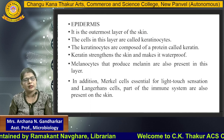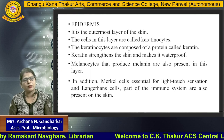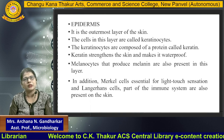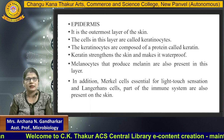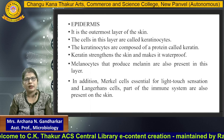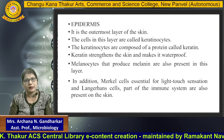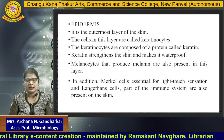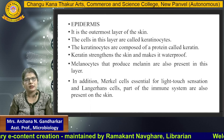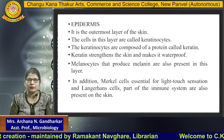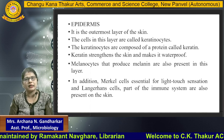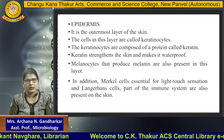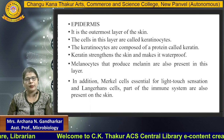In case of the epidermis, it is the outer layer of the skin. The main thin layer which we call keratinocytes — these keratinocytes are composed of the protein called keratin. Keratin strengthens the skin and makes it waterproof in nature. Also, a second cell type called melanocyte produces melanin and is also present in this layer. In addition to keratinocytes and melanocytes, another cell type called Merkel cells is there which is essential for light touch sensation, and Langerhans cells, which are part of the immune system, are also present in the epidermis layer.